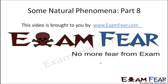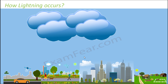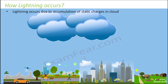This video on natural phenomena part 8 is brought to you by examfear.com. Let's see how lightning occurs. Lightning generally occurs when there is a thunderstorm, when there are clouds in the sky. You do not see lightning without clouds. There is a close relation between clouds and lightning — lightning occurs due to accumulation of static charges in the clouds.